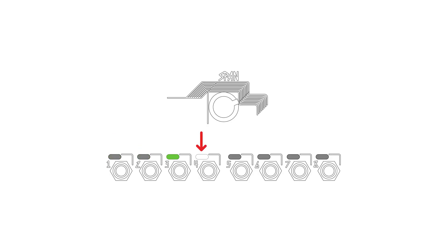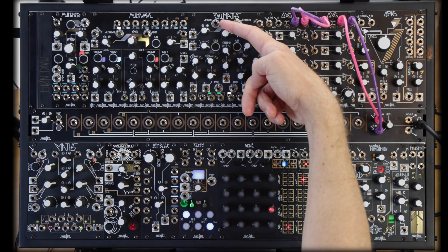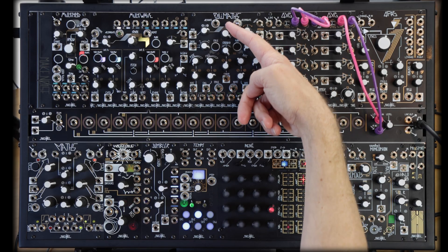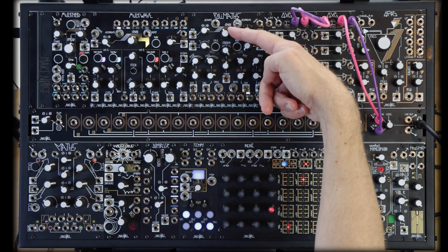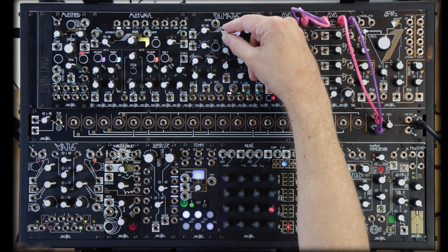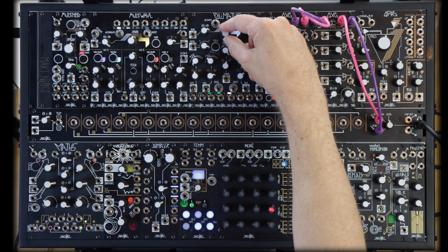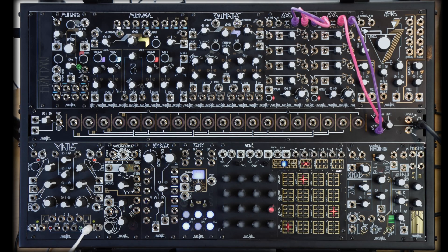In Channel Index mode, just point span at a channel to activate it. Midnight on the span knob is no channel selected, and then we can activate from there in either direction — right to left or left to right. But better yet, we can put it under voltage control. We'll start simple: a cycling function from Maths.